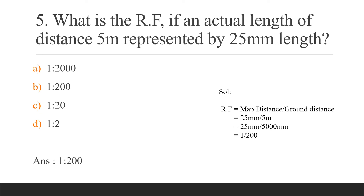Next question: What is the RF if an actual length of 5 meters is represented by 25mm? The representative fraction is map distance divided by ground distance. The original distance is 5 meters. Converting to the same unit: 25mm divided by 5000mm gives 1/200. So the representative fraction is equal to 1 to 200.